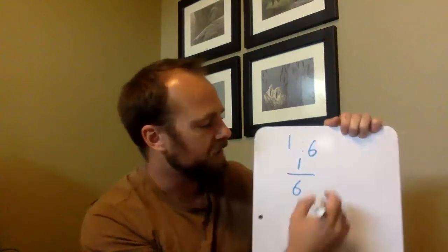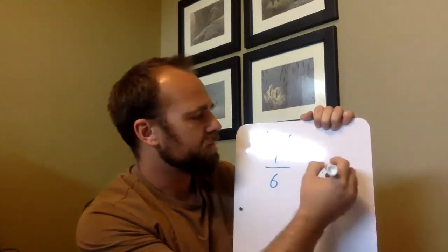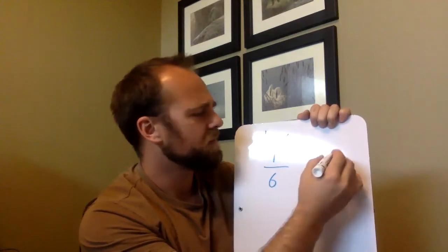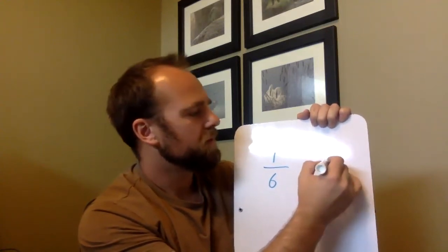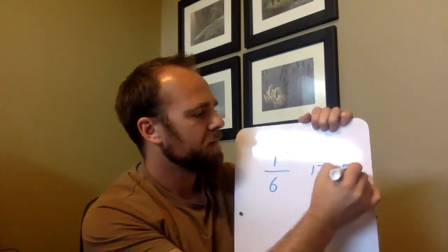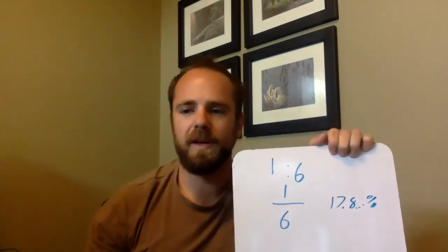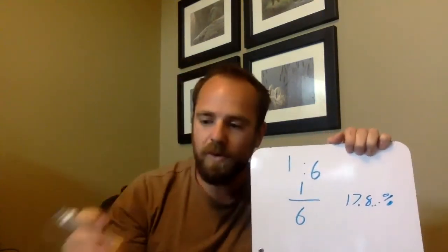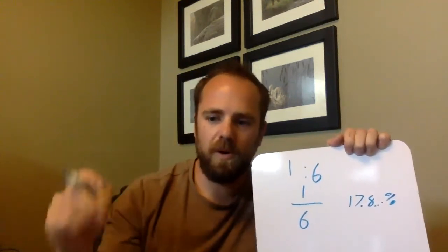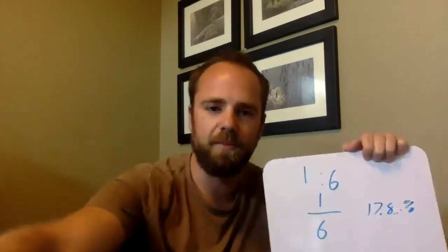There are six different numbers on this die, so the fraction is one over six. The percentage would be approximately 17.8%. That would be my probability of rolling a six — or a four, or a two, or a one — if I was hoping for any particular number.